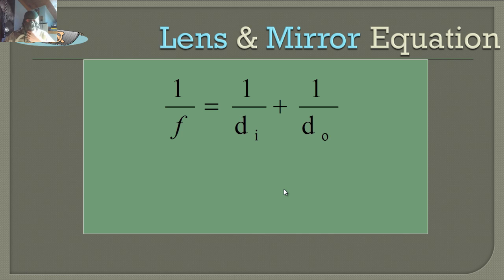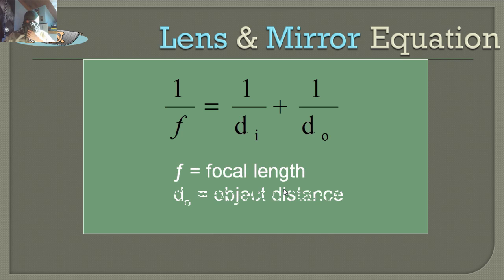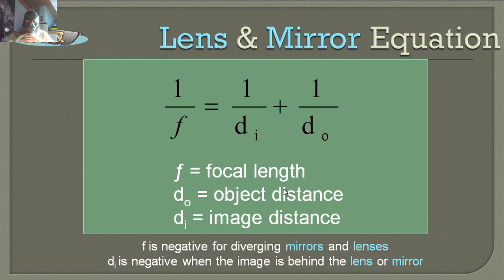The lens and mirror equation: 1 over f, the focal distance, equals 1 over the image distance plus 1 over the object distance. f is the focal length and DI is the image distance. Be careful with signs: f is negative for diverging mirrors and lenses — the ones that don't converge. And DI is negative when the image is behind the lens or mirror.